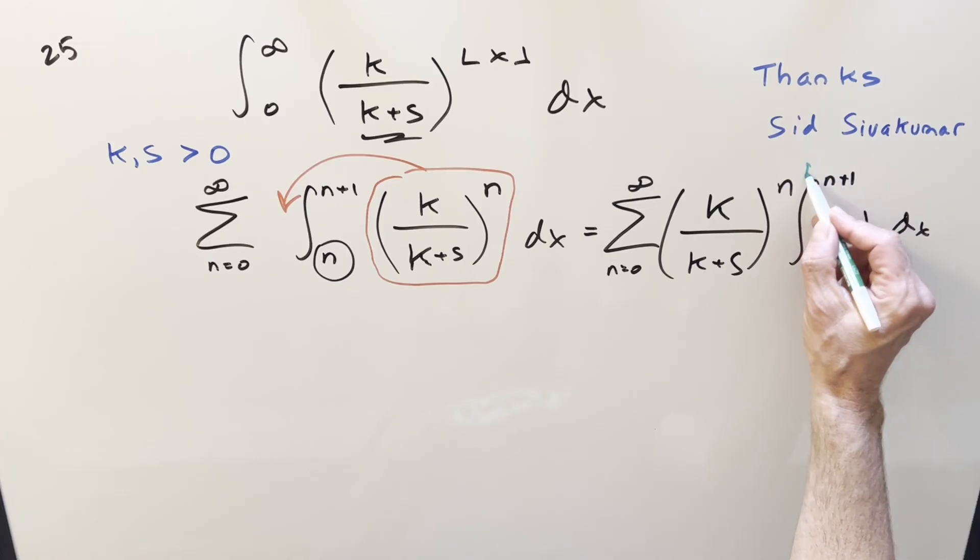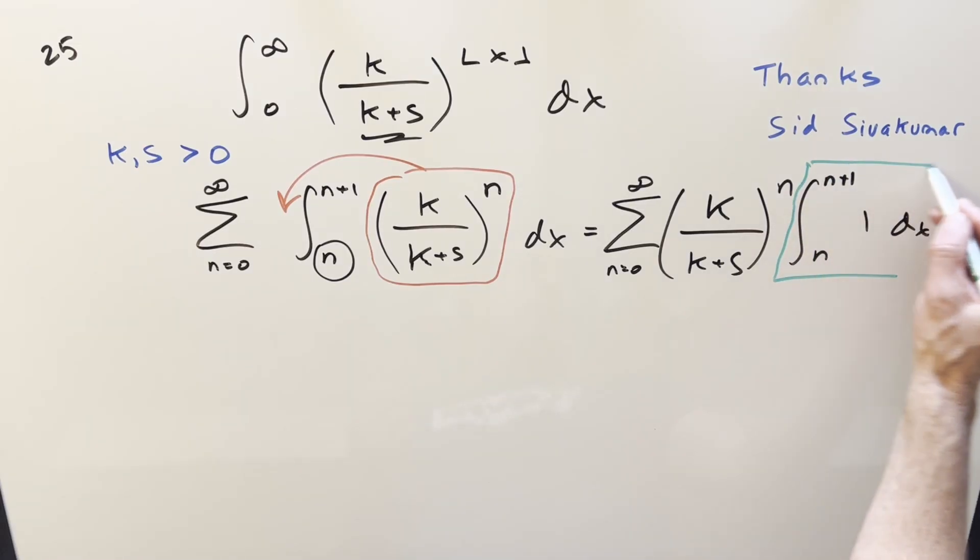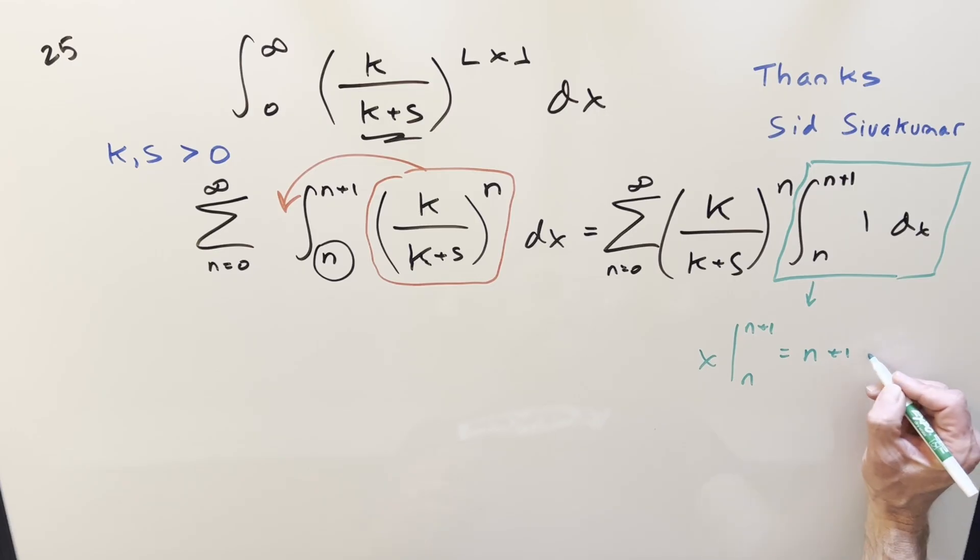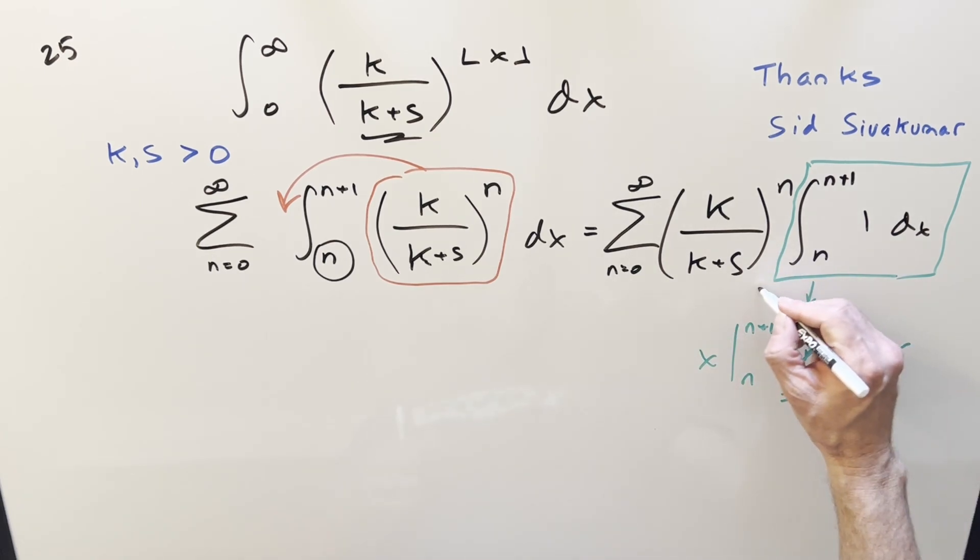For this integral right here, we can just do this really quick. So when you integrate that, you're just going to get x evaluated from n to n plus 1. You plug that in, you get n plus 1 minus n. That's going to cancel, and this thing's just a 1. So if the integral is just 1, we're multiplying that in. We can basically just get rid of that, because we're just multiplying by 1. And then we just need to deal with this sum right here.